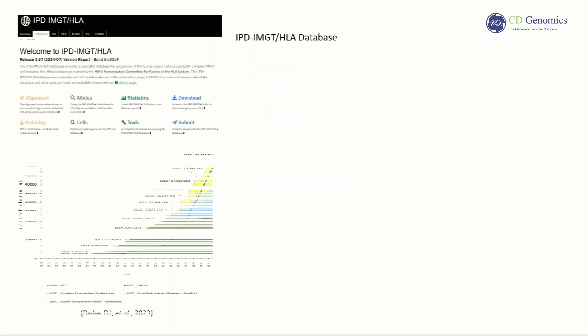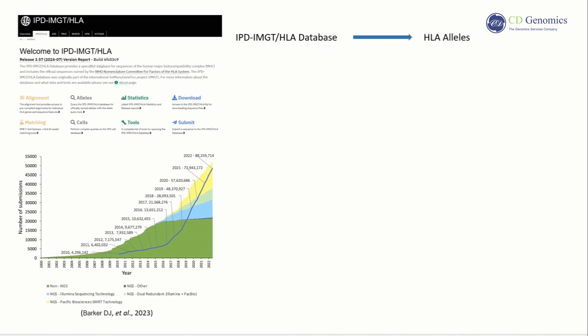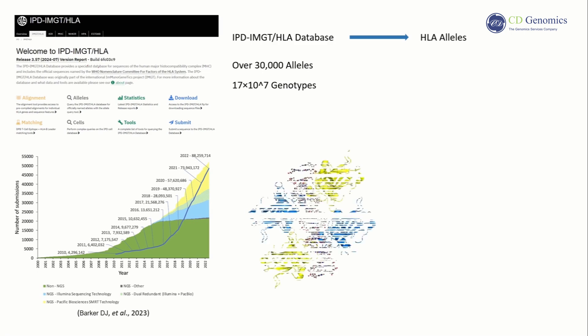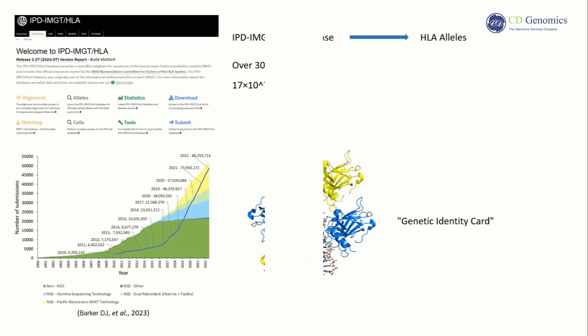The IPD-IMGT/HLA database stands as a comprehensive repository of HLA alleles, currently documenting over 30,000 alleles. Approximately 1,737 genotypes have been discovered, and apart from identical twins, it is rare to find individuals with the same HLA, hence HLA is referred to as the genetic identity card.